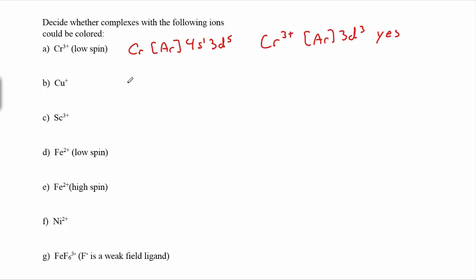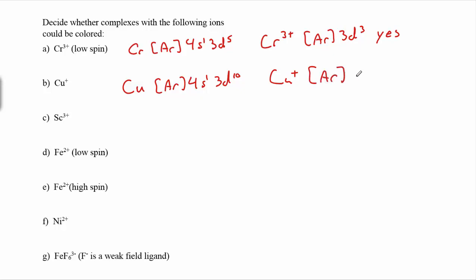For copper(I), remember that chromium and copper are exceptions. Copper is [Ar] 4s¹ 3d¹⁰, so Cu⁺ loses the 4s electron, giving [Ar] 3d¹⁰. Having 10 d electrons, we do not anticipate complexes containing Cu⁺ to be colored.